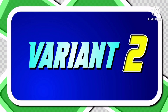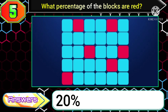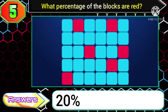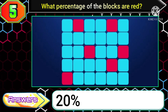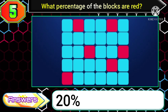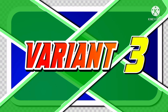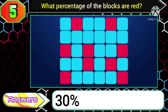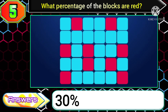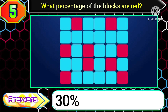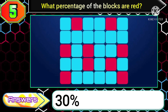Next, in variant 2 of this question, if you get the total number of red blocks as 6, then you need to choose the option 20 percent. At last, in variant 3 of this question, if you get the total number of red blocks as 9, then you need to select the option 30 percent.